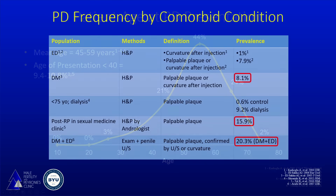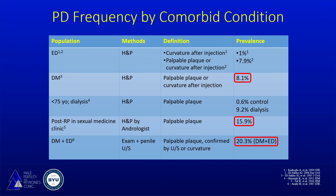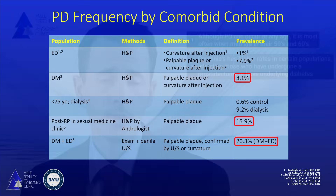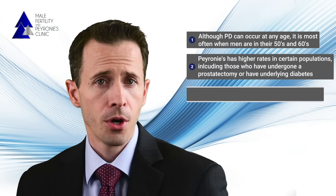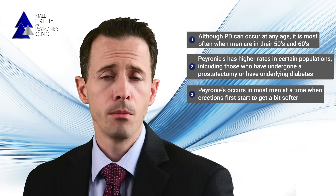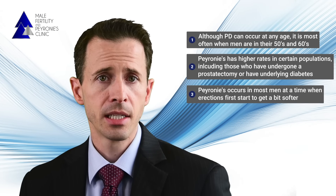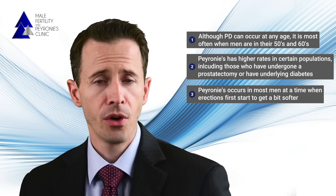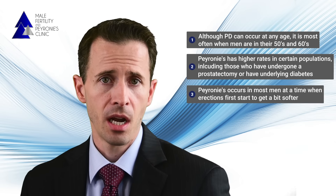Second, we see it occur in higher rates in certain populations, including those who've undergone a prostatectomy or have underlying diabetes. Third, it occurs in most men at a time when erections first start to get a bit softer.